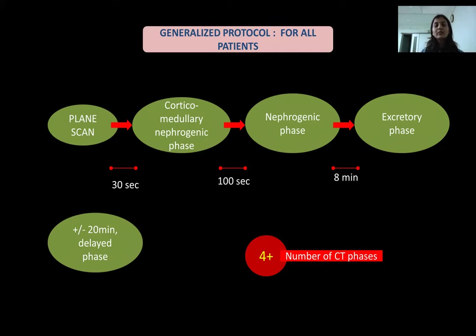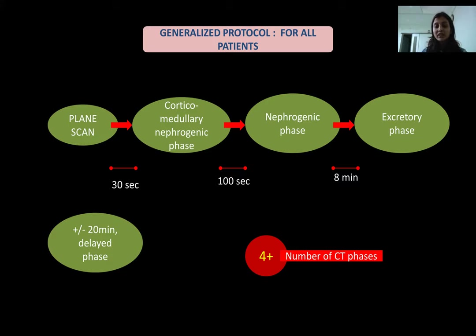This chart represents a generalized protocol of CT urography study. A plain scan is done followed by contrast administration. After 30 seconds of contrast injection, a corticomedullary phase is taken. After 80 to 100 seconds, a nephrogenic phase is taken. After 8 minutes, an excretory phase is done, and depending on the patient, a delayed phase is taken at 20 minutes. So, a total of 4 or more CT phases are required.